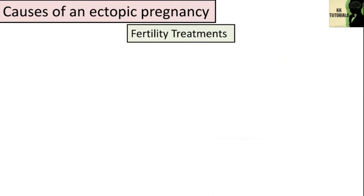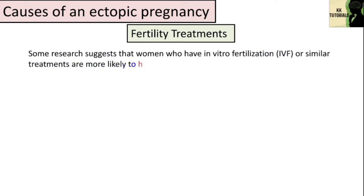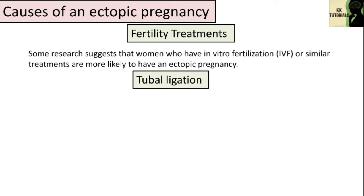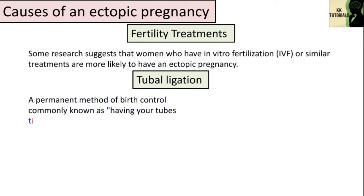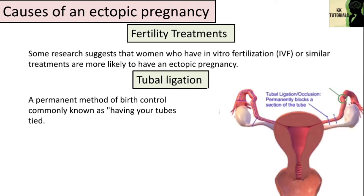Fertility treatments: some research suggests that women who have in vitro fertilization or similar treatments are more likely to have an ectopic pregnancy; infertility itself may also raise your risk. Tubal ligation — a surgical procedure to prevent pregnancy, commonly known as having your tubes tied, where the fallopian tubes are tied off — is a permanent method of birth control that can predispose to ectopic pregnancy.